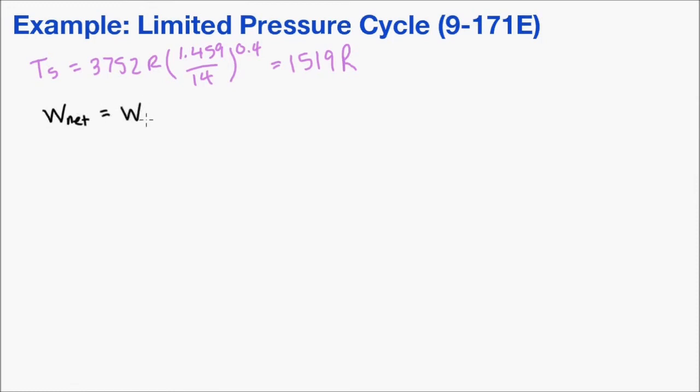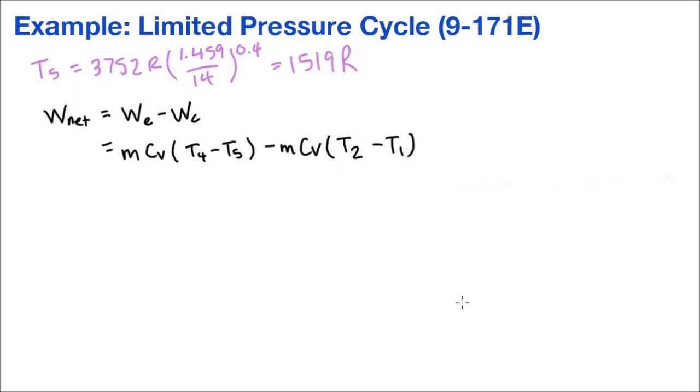So now we can calculate the total network. It's the work done during the expansion, subtract the work done by compression. So if I were to continue with this line of thinking, I'd be making a mistake. The reason there's a mistake is because I'm not including the work done during the constant pressure heat addition. So you'll recall the piston's moving during that time, so work's done. So we can add the boundary work to this equation here. We'd have P3 multiplied by the difference in volume.